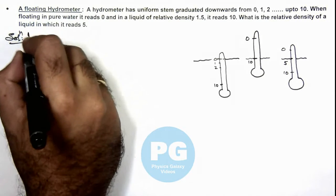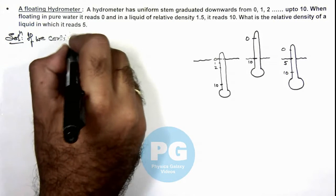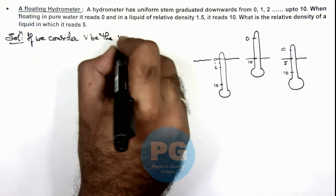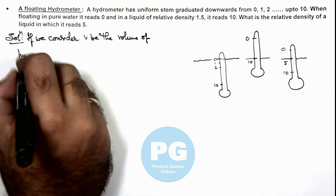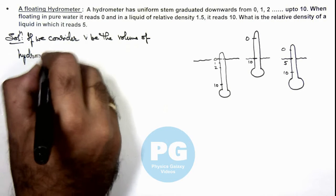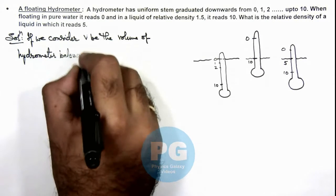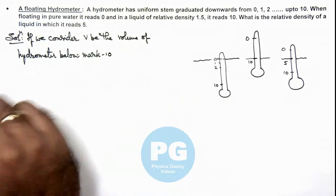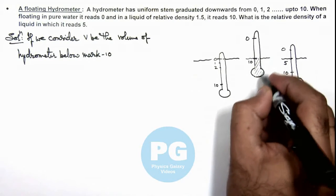Here, if we consider V be the volume of hydrometer below mark 10, then we can see this volume we are assuming as V.